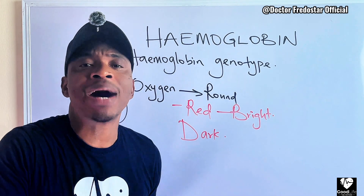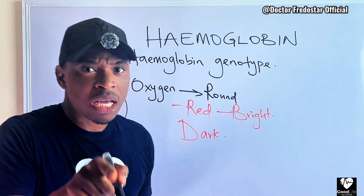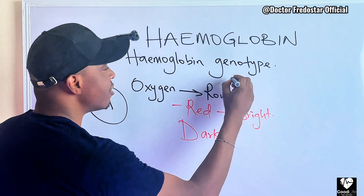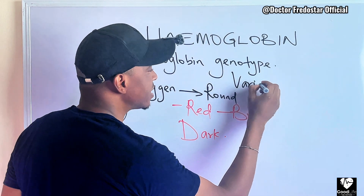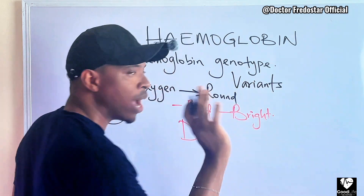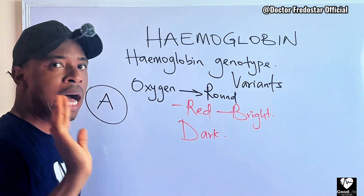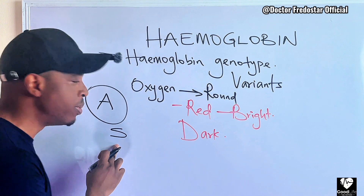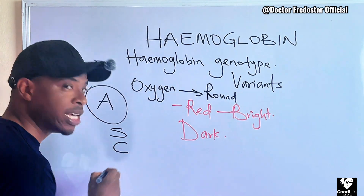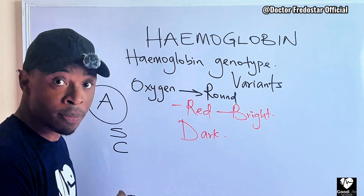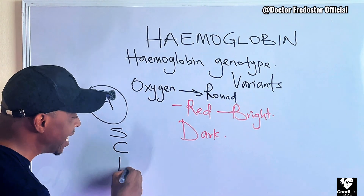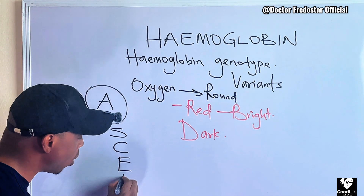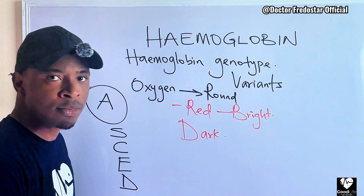We also get abnormal hemoglobin genotype. In science, we call them variants — and there are plenty of them. Abnormal hemoglobin: we get S, we get another one C, we get another one E, we get another one D — these are abnormal hemoglobin variants.